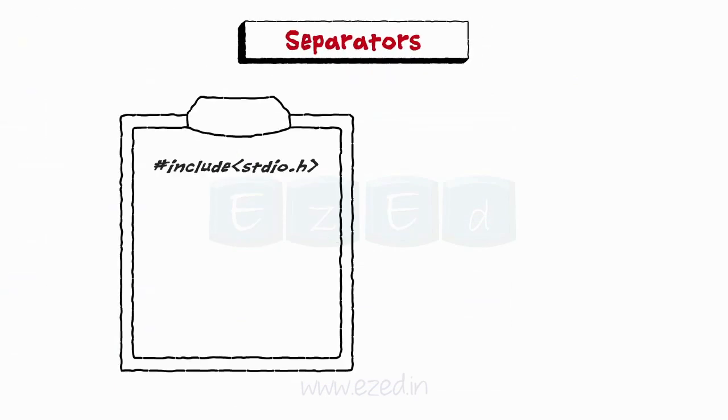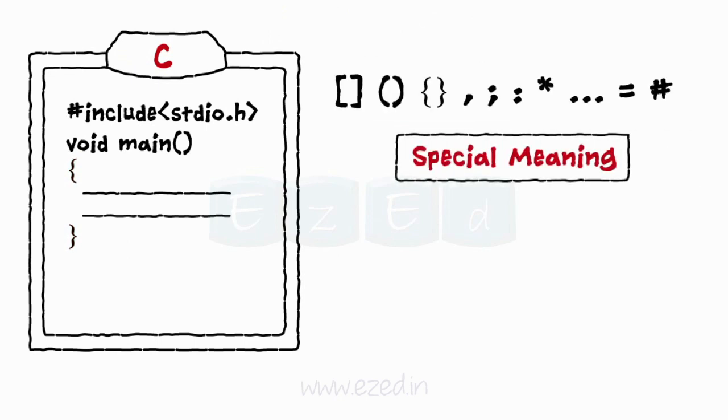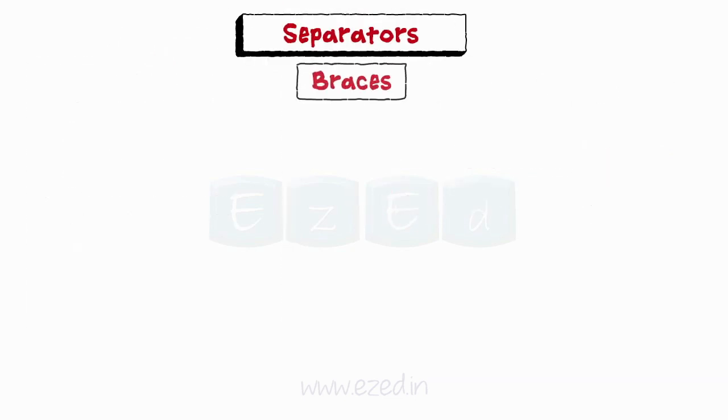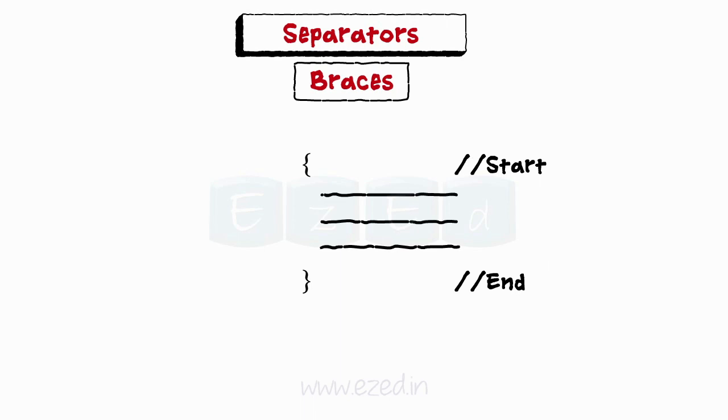Fourth type of C tokens are the separators. They are basically symbols in C which are used to provide separation between each token in a C program. The following special symbols are used in C having some special meaning and thus cannot be used for some other purpose. Braces: These opening and closing curly braces mark the start and the end of a block of code containing more than one executable statement.